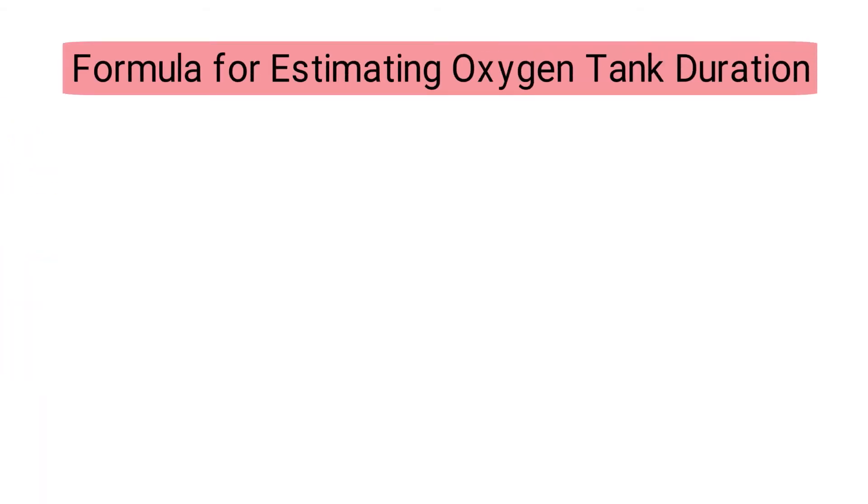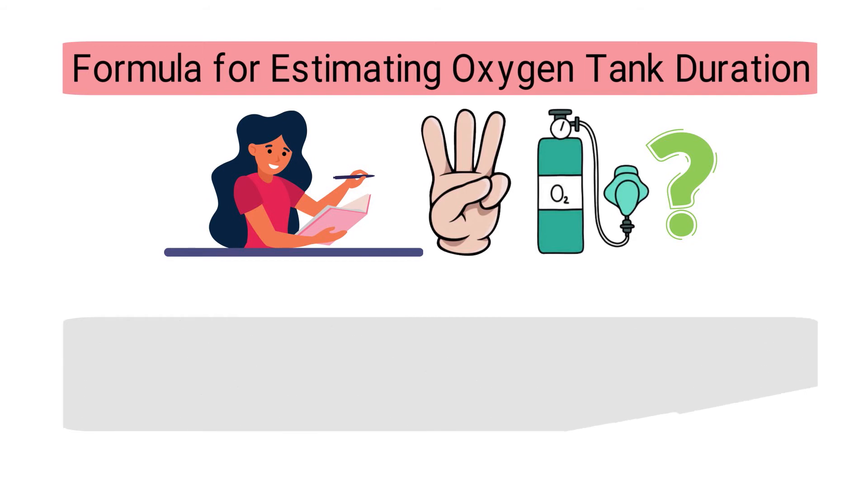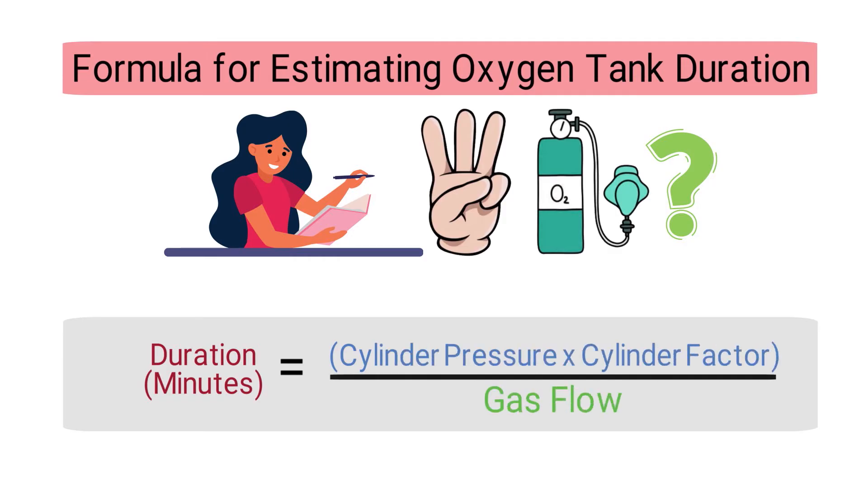Next, you need to know the formula for estimating oxygen tank duration. Now that we know the three main factors that dictate how long an oxygen tank will last, we can put them into a simple formula to calculate the duration. The simple formula is as follows: the duration in minutes equals the cylinder pressure times the cylinder factor divided by the gas flow.